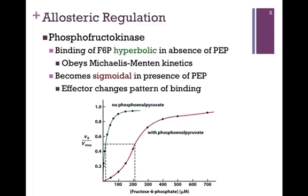Let's look at the enzyme activity of phosphofructokinase in the absence and presence of PEP. Here we have a substrate saturation curve. Our substrate concentration is fructose 6-phosphate on the x-axis, increasing from left to right, and we have the velocity on the y-axis. We've normalized the initial velocity by dividing by the Vmax, but it is, in essence, a substrate saturation curve. Looking first at the green trace, which represents the activity of the enzyme in the absence of PEP — it's a hyperbolic plot, which means it obeys Michaelis-Menten kinetics. At that halfway point shown by the dashed line, we have a very low Km, indicating a high affinity for substrate.